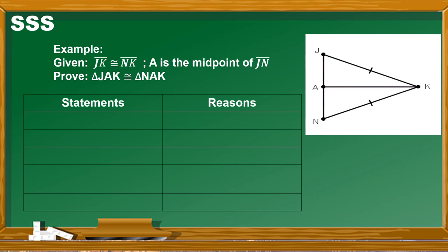As mentioned, the two-column proof consists of statements and reasons — each statement must be logically ordered, meaning each statement must be related to one another. We use the illustration to see the order and sequence of each statement. In proving triangle congruence, we always start with the given. So our first statement is: segment JK is congruent to segment NK, and the reason is given.